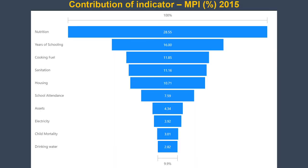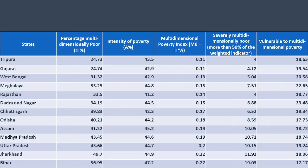The indicators contributing most to the MPI are nutrition, followed by years of schooling and cooking fuels. Therefore, measures should be focused on nutrition and years of schooling to reduce the overall MPI of the country.